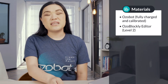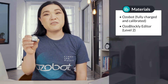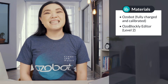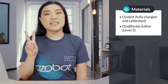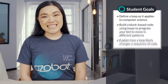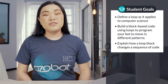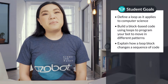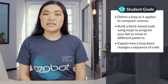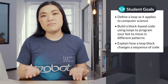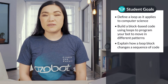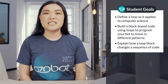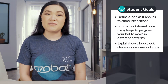For today's lesson, you will need an Ozobot, fully charged and calibrated, and the OzoBlockly editor. Today we'll be working in level two. In today's lesson, you will define a loop as it applies to computer science, build a block-based code using loops to program your bot to move in different patterns, and explain how a loop changes the sequence of a code.